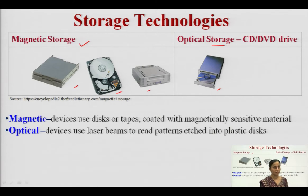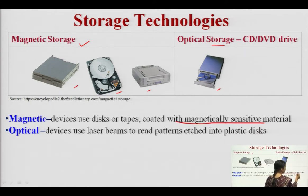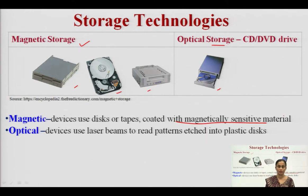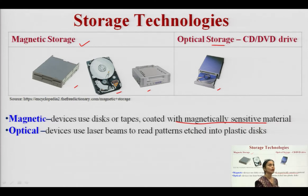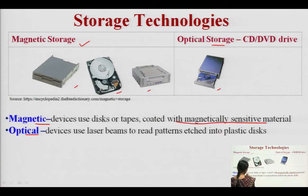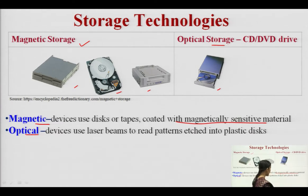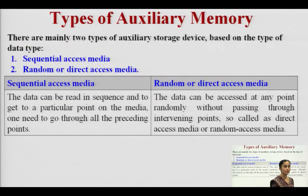Magnetic devices use discs or tapes coated with magnetically sensitive material. This coating allows them to store data in the form of zeros and ones, and we can perform both read and write operations using magnetic storage technologies. The second category is optical: these devices use laser beams to read different patterns etched into a plastic disc, and also perform write operations when the laser beam hits specific points.